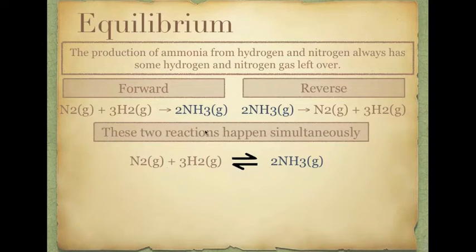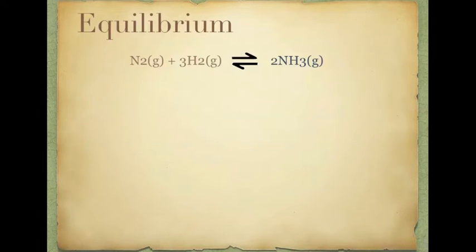These two reactions happen simultaneously. Okay, so they're constantly happening. We're constantly forming ammonia. We're constantly having ammonia break up. Okay, when it reaches equilibrium, these two reactions happen at the same rate. Let's have a look at some diagrams for this.